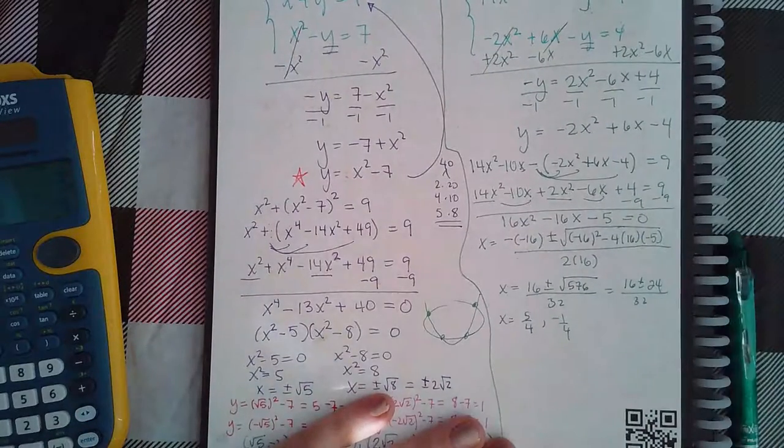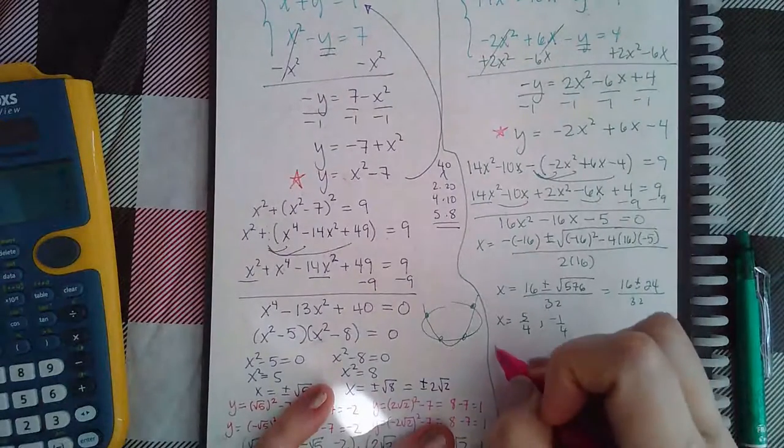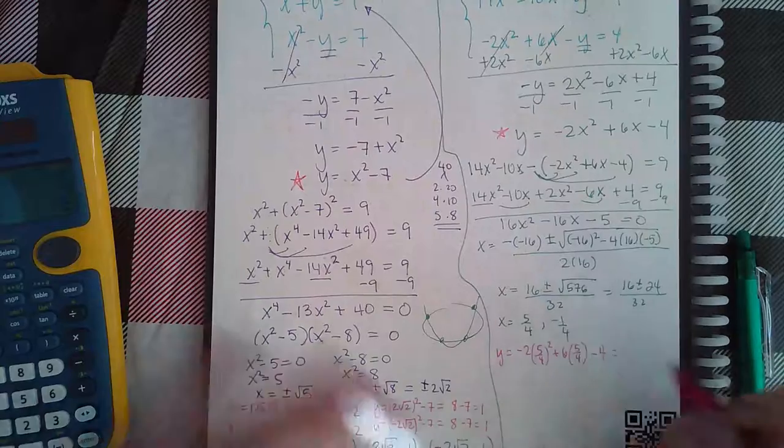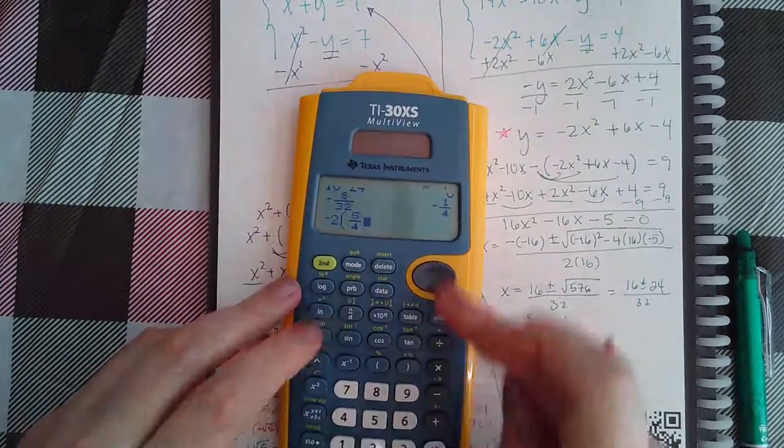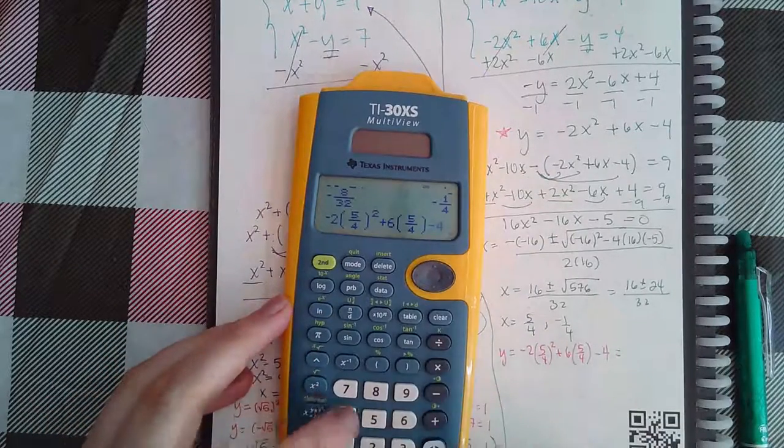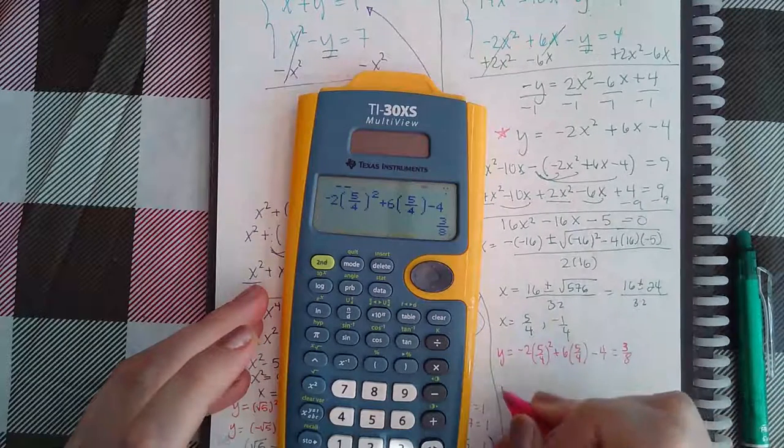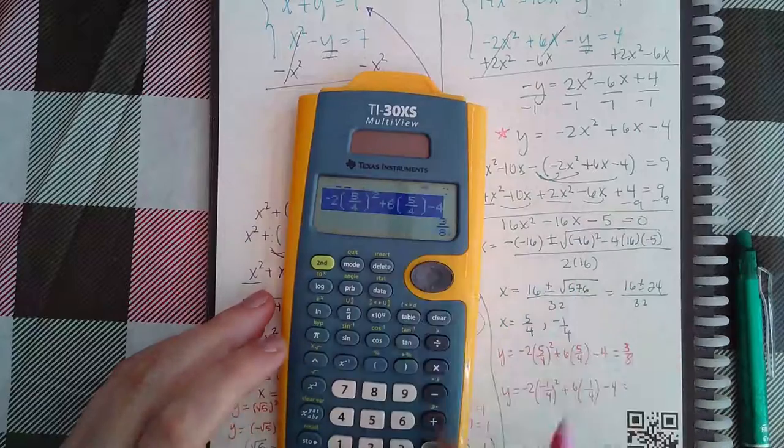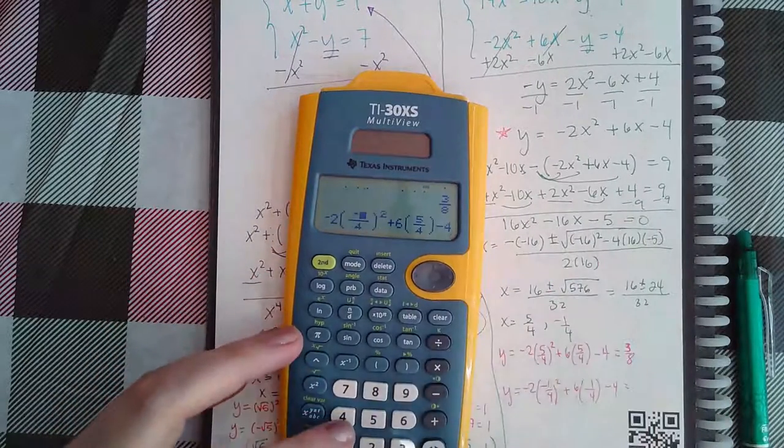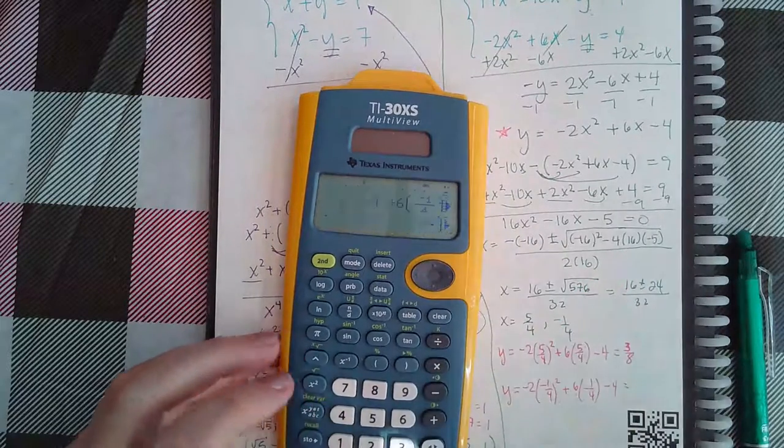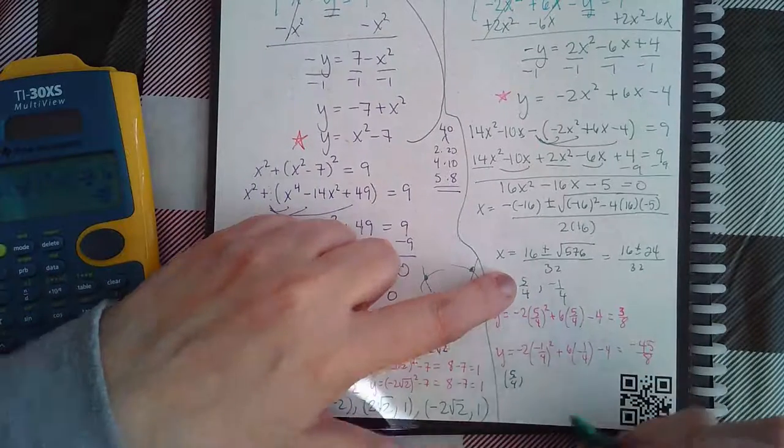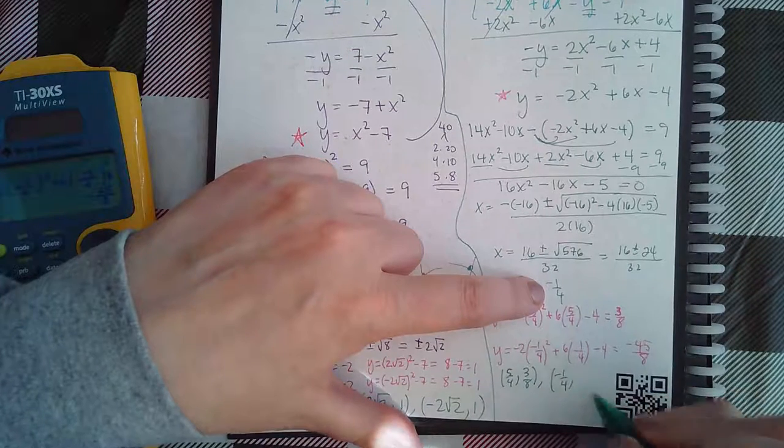I have two x values here. Now I'm going to plug them in to where I had the y to figure out what the y values are. For 5 fourths you have negative 2 times 5 fourths squared plus 6 times 5 fourths minus 4, which I get 3 eighths. For the other x value negative 1 fourth, I get negative 45 over 8.